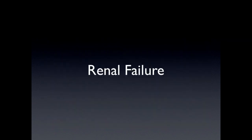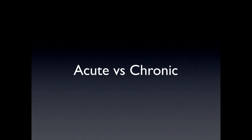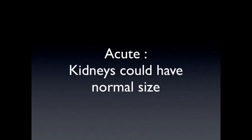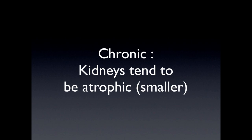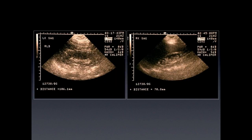Renal failure. In cases of acute versus chronic: in acute renal failure, there's normally no change in renal size — kidneys can be normal in their dimensions. Although in chronic renal failure, they tend to be atrophic and smaller. Comparing these two images, on the left side you have the left kidney measuring about 10 centimeters, which is a normal measurement. On the right side, it measures about 7 centimeters, which is definitely smaller — there's atrophy. You need to compare both sides.